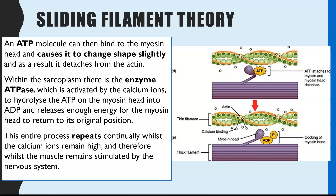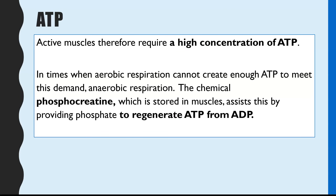The myosin head rebinds to the actin, creates tension, slides it along, and so on. This process continually happens until the actin cannot be moved any closer together or until you run out of ATP. The muscle remains stimulated by the nervous system for as long as calcium ions are being released and ATP is present — and that's how you end up with full muscle contraction in the sliding filament theory. This also highlights why ATP is such an important molecule and why there are so many mitochondria in the myofibril.